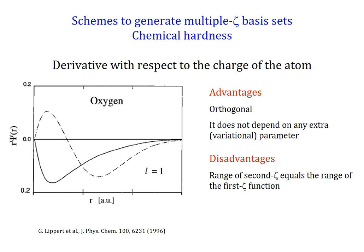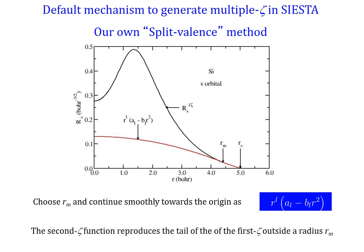There are other options. One possibility is using chemical hardness ideas to generate the multiple zeta, meaning using the derivative with respect to charging the atom. That derivative gives another radial shape that we can use to give flexibility to the atom to charge and deform as it is charged or uncharged. A further option — and this is the one we like most, use regularly, and is actually the default — is our own version of the quantum chemistry split valence method, which essentially introduces different functions to reproduce different bits of the atomic orbital.